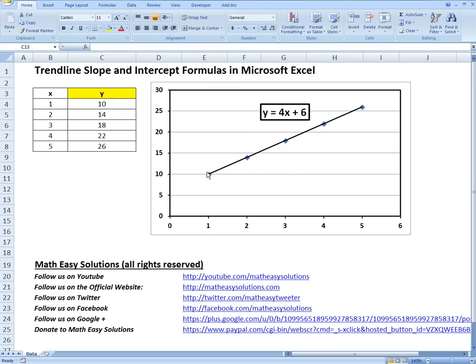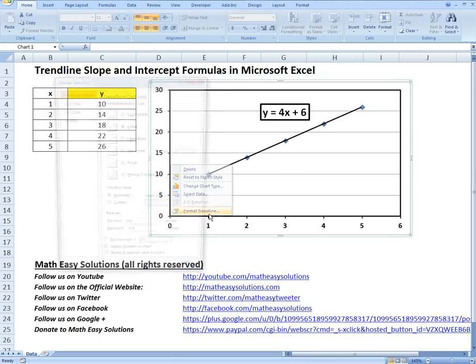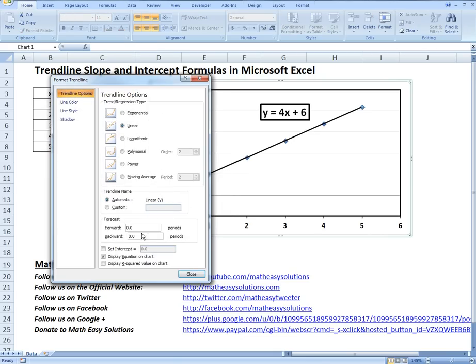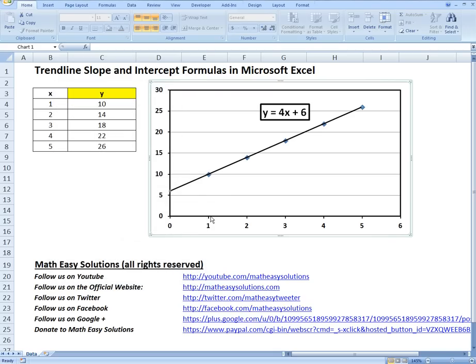And the 6 is the y-intercept. If you extend this further out, you can extend it actually just by right-clicking the trendline, format trendline. Let's go backwards, let's go 1. So if we go backwards 1, because we start at 1 there, we just go backwards 1. As you can see, it goes to the 6, somewhere there.